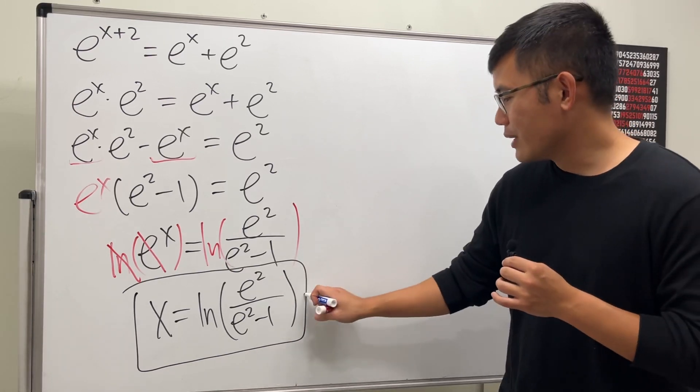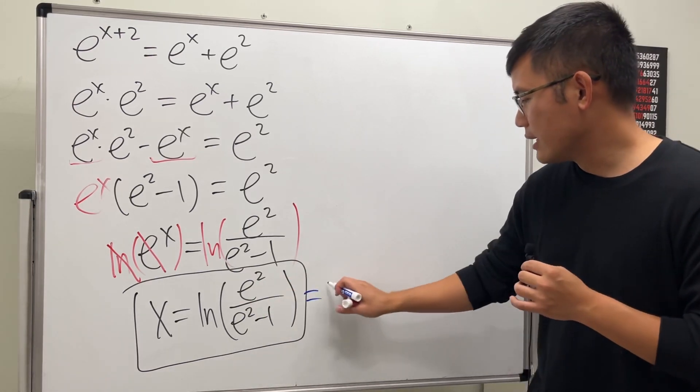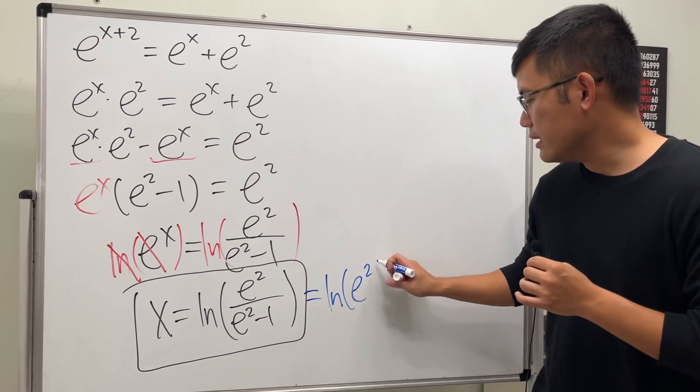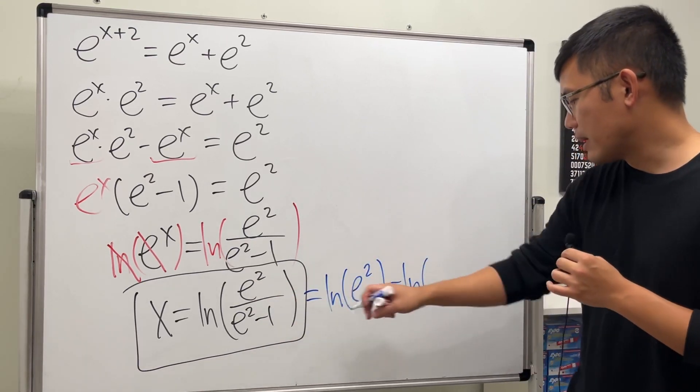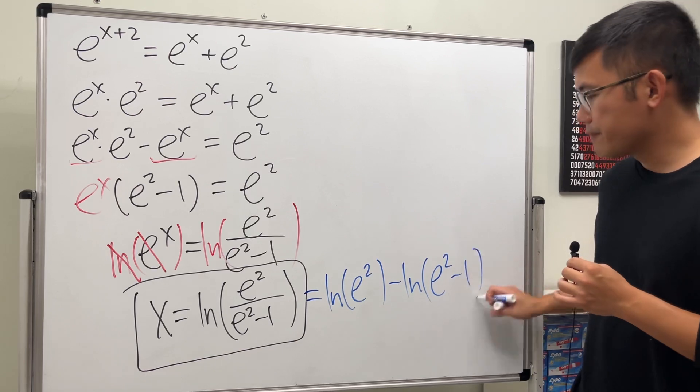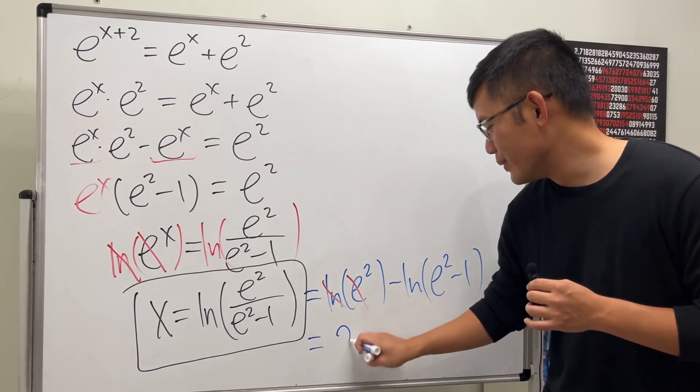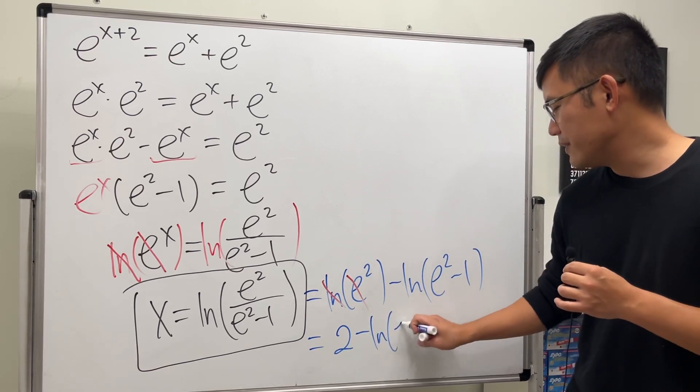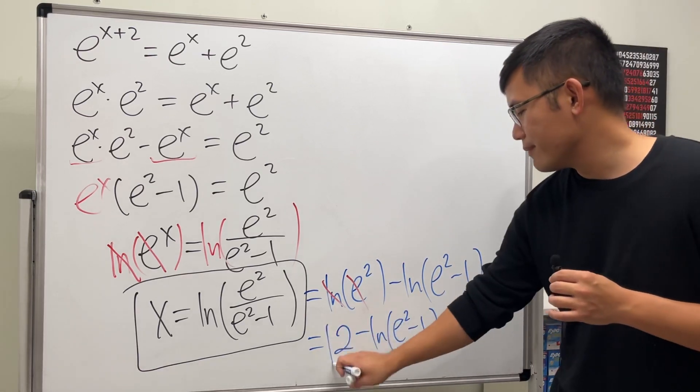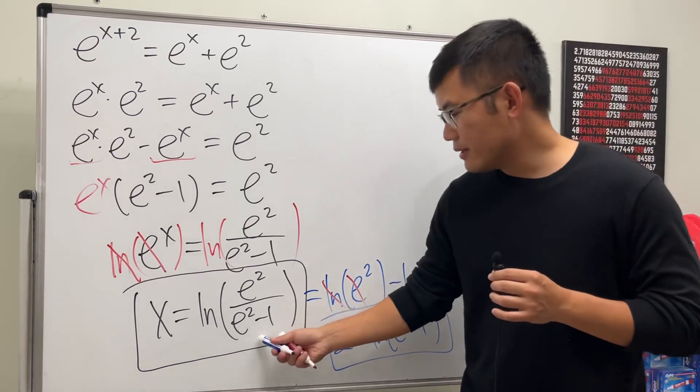What you can do is you can write this as ln of e to the second minus ln of the bottom, which is (e to the second minus one). This center cancels, so we actually just get 2 minus ln of (e to the second minus one). So one way or the other, I personally prefer this right here.